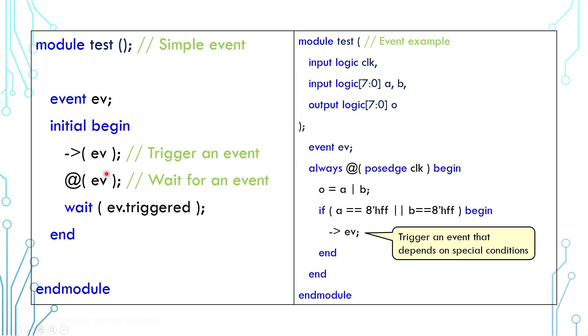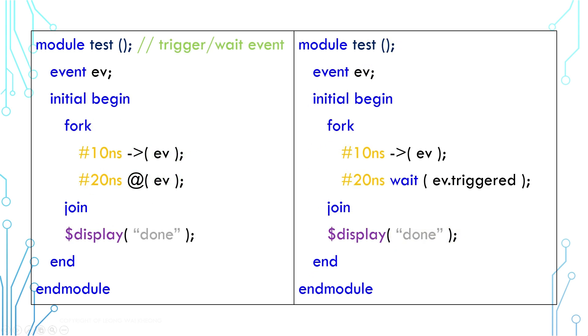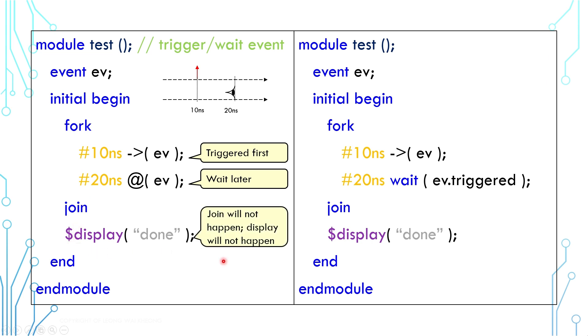This example has two threads. The first one triggers the event at 10 nanoseconds, and the second one waits for the event at 20 nanoseconds. As we can see, the blocking will never see the event trigger, and as a result the join will never happen, and thus the display will never happen.